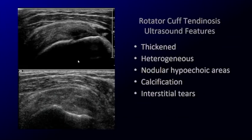Here is an example of tendinosis in the rotator cuff; in this case we're looking at the infraspinatus tendon. The tendon is thickened and heterogeneous. You may see nodular or spotty hypoechoic areas. Over time, calcification may develop in the tendon and even interstitial or intrasubstance tears.